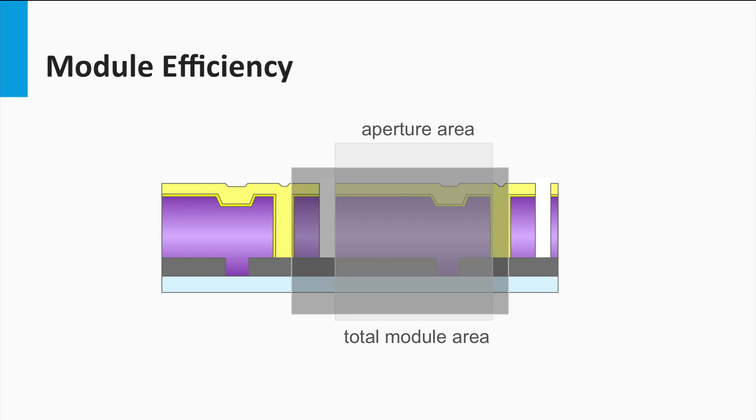This area includes the dead area created by interconnection and the edges of the module. The record efficiencies of one square meter modules are in the order of 13% whereas the aperture area efficiencies are just above 14% as confirmed by NREL.